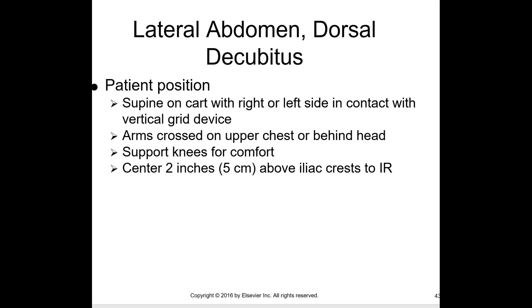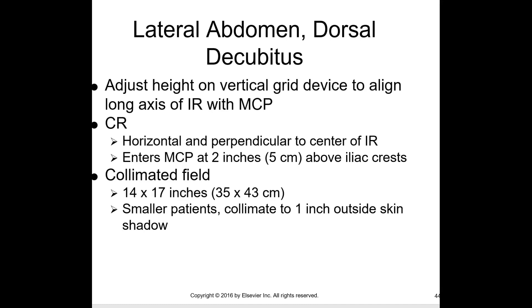For the lateral abdomen dorsal decubitus, patient position is supine on cart with the left to right side in contact with a vertical grid, arms crossed on upper chest or behind the head, and support knees for comfort. Center two inches above the iliac crest to the IR. Adjust height on the vertical grid device to align the long axis of the IR with the MCP. The central ray is horizontal and perpendicular to the center of the IR, entering the MCP at two inches above the iliac crest. For smaller patients, collimate eight to one inch outside the skin line.